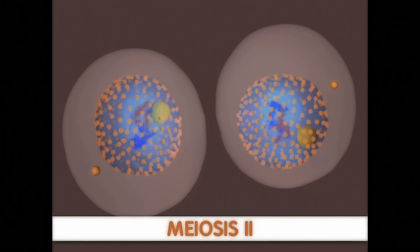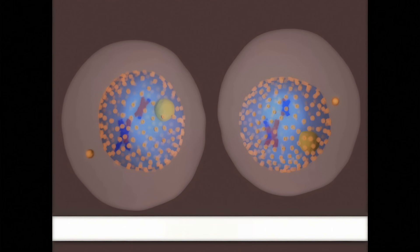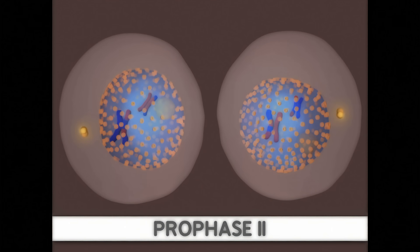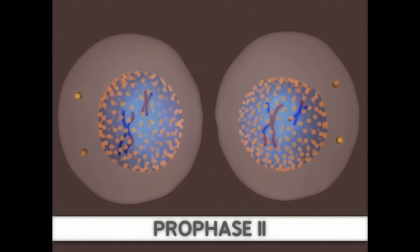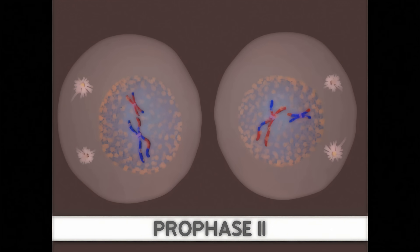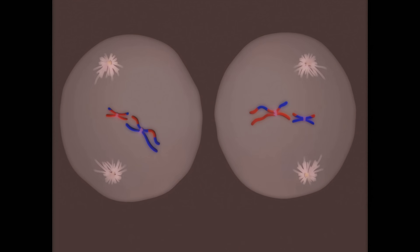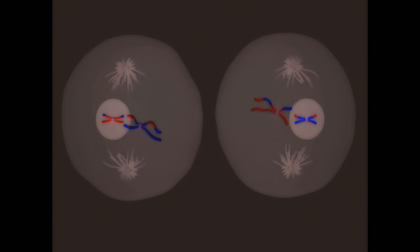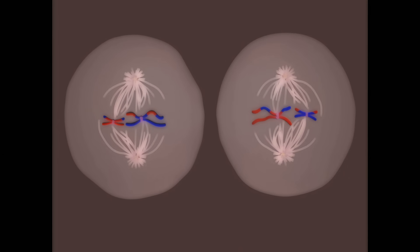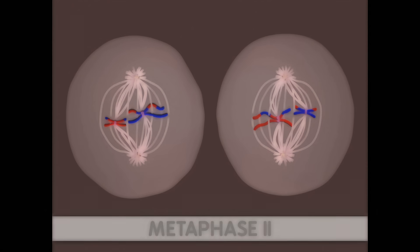Meiosis II is similar to mitosis. The first stage of meiosis II is prophase II. Again, chromosomes condense, the nuclear envelope breaks down, and the spindle apparatus forms. The major difference between prophase II and prophase I is the fact that the daughter cells have only one copy of each homologous chromosome. So, in prophase II, there is no synapsis of homologous chromosomes or crossing over.